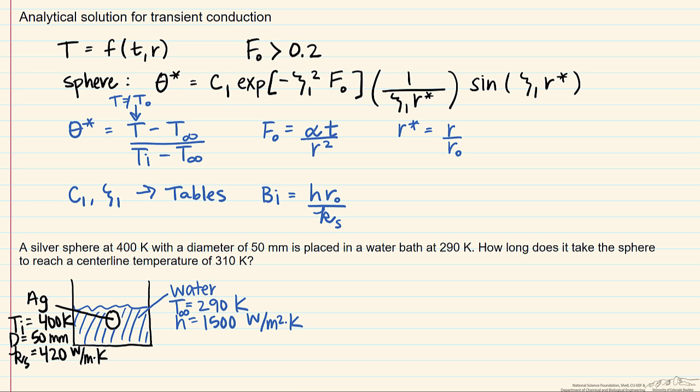Let's look at our previous problem. So we have, again, we have this sphere, it's silver, it's at 400 Kelvin. It has a diameter that's equal to 50 millimeters, and it's placed in a water bath, and this water bath has a temperature that's equal to 290 Kelvin. And what we're trying to do, again, is to find the time it takes for the centerline temperature, which we'll call T sub 0, to reach 310 Kelvin.